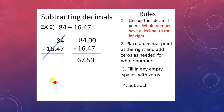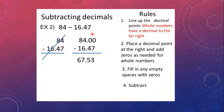One more example shows subtracting a decimal from a whole number. First, line up the decimal points — whole numbers have a decimal to the far right. Since 16.47 has two decimal places, add two zeros to 84, making it 84.00. Then subtract: 10 minus 7 is 3, 9 minus 4 is 5, then borrow to get 13 minus 6 is 7, and 7 minus 1 is 6. Answer is 67.53.